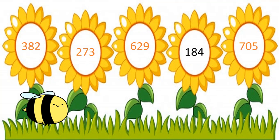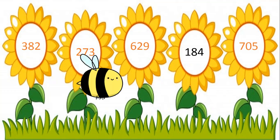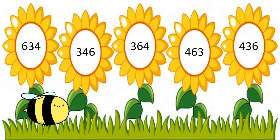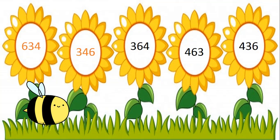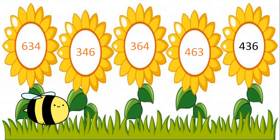Mrs. Buzzy, do you have some more number flowers? Yes, let's go. Here are some more number flowers. My dear children, can you see the numbers on flowers? Let's find out the smallest number. Let's read the numbers: 634, 346, 364, 463, and 436.